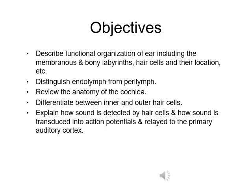Now let's talk about the auditory system or the hearing system. These systems are also associated with the eighth cranial nerve and its structure is also very close to the vestibular system. After this section you should be able to describe the functional organization of the hearing system, distinguish the endolymph and the perilymph, know the anatomy of the cochlea, differentiate inner and outer hair cells, and explain how sound is detected by hair cells, transduced into action potentials, and transferred to the primary auditory cortex.